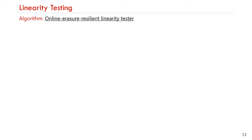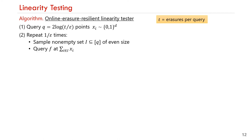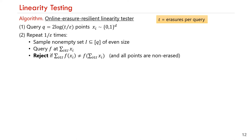Our online erasure-resilient linearity tester is as follows. First, the tester queries 2·log(t)/epsilon points x_i, sampled uniformly and independently at random from the domain, where t is the number of erasures per query. The tester then repeats the following 1/epsilon times: it samples a non-empty subset I of [q] of even size, queries f of the sum of x_i for indices in I, and rejects if the sum of f(x_i) does not equal f(sum of x_i) and all relevant values are non-erased. If after 1/epsilon repetitions no violation is caught, the tester accepts.